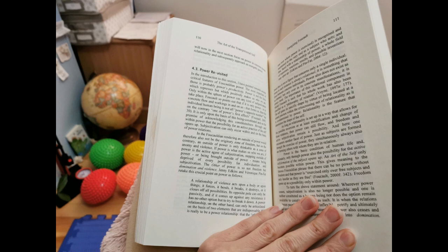Foucault points out that if it is only power, in its concrete flow and workings, in and on us, that forms us, then the individual human being is not power's opposite number, but on the contrary, one of power's first effects. It is only upon the basis of this being constituted and on the premise of acknowledging this constitutedness through and within power, that the possibility for an active practice of the self opens up.